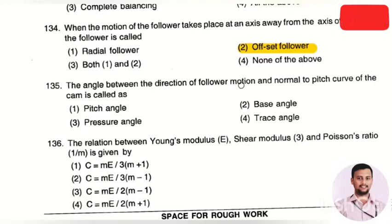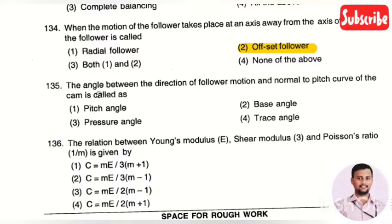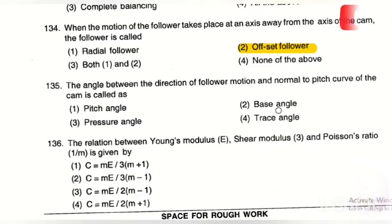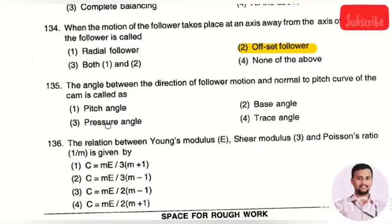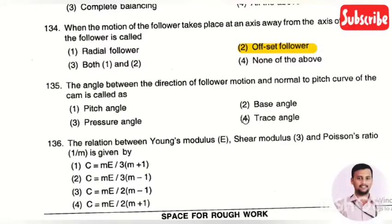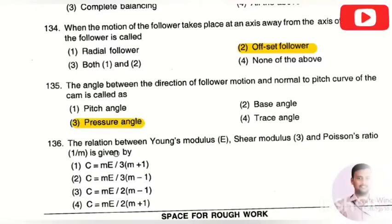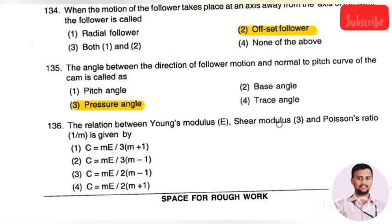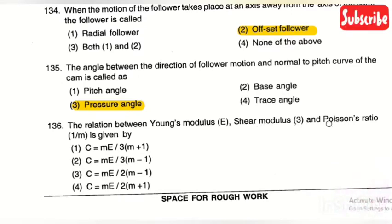The next question: the angle between the direction of follower motion and the normal to the pitch curve of a cam is called — option 1: pitch angle, option 2: base angle, option 3: pressure angle, option 4: trace angle. The right answer is option 3, pressure angle.